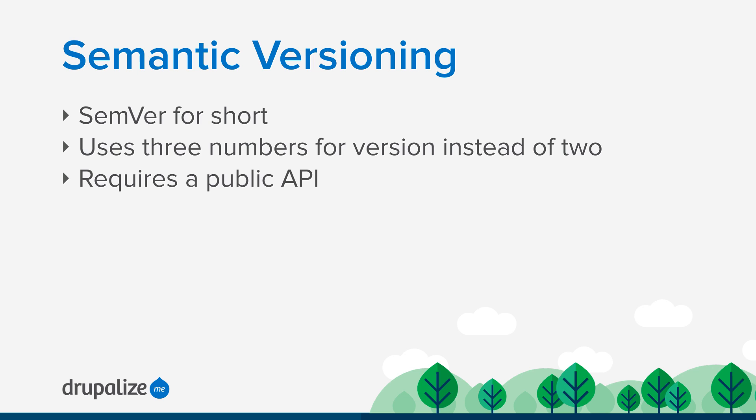Semantic versioning — semver is a short form you may see out there — uses a three-number system instead of a two-number system for a release number on a piece of software. You might be familiar with software release numbers like 1.0, 1.1, 1.2. With semantic versioning, we use three numbers, and we're going to take a look at that in a second to see what that means and what it looks like.